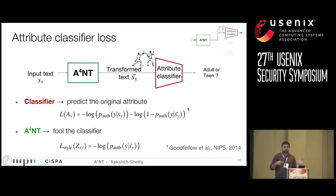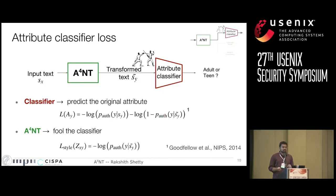In this GAN framework, the attribute classifier looks at the text generated by ANT and tries to predict the original attribute. So if you want to go from teenager style to adult, an age classifier tries to predict that the text generated by ANT is still in teenager style. ANT tries to fool this classifier by making it think the text it generates is in adult style. You train these models against each other until convergence, and at that point ANT should mimic the target style perfectly.